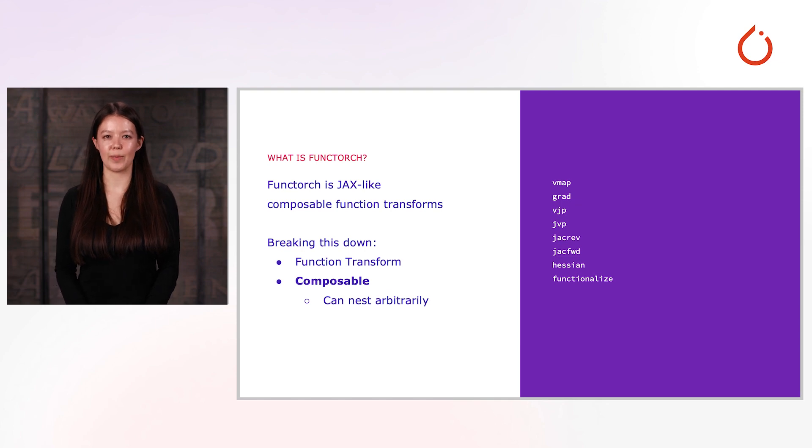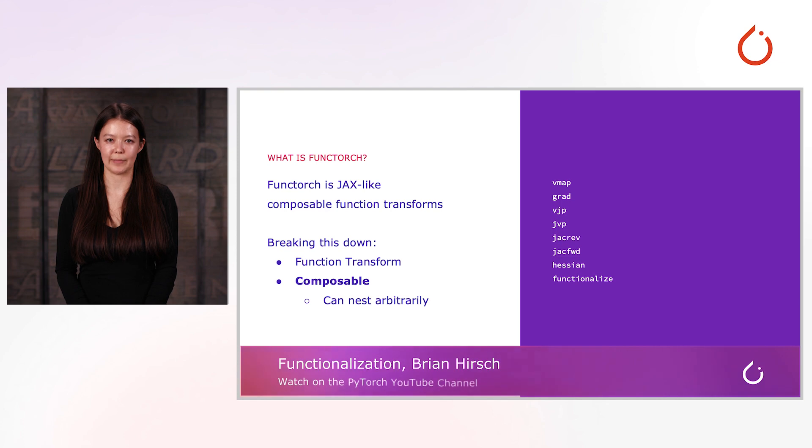Composable means that they can nest arbitrarily. Examples include grad of grad of f, which will compute the second derivative, and vmap of grad of f, which will produce per-sample gradients. Some things, like per-sample gradients and higher-order forward mode, can't be computed efficiently in stock PyTorch. As a note, our examples will not use Functionalize, but Brian Hirsch is presenting this here. FuncTorch offers a version of this that works with other transforms, like vmap and grad.